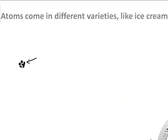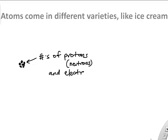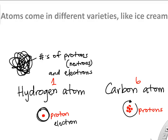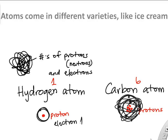Atoms come in varieties just like ice cream. What determines which type of atom you're looking at really has to do with the number of protons and electrons. A hydrogen atom has one proton and one electron, while a carbon atom has six protons and six electrons circulating around its nucleus.